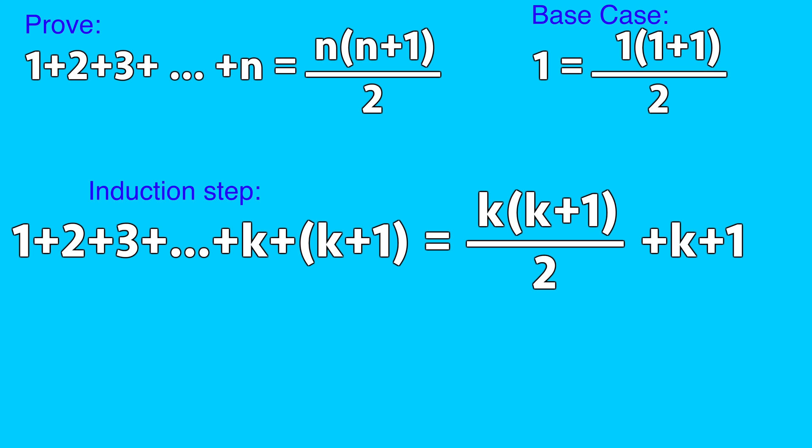Then if we include the next term, k plus 1, we need to show that the right hand side of the equation also has the form n times n plus 1 divided by 2.